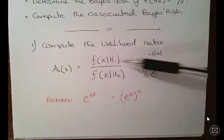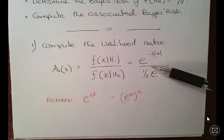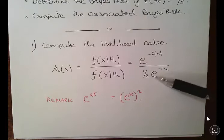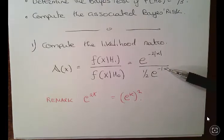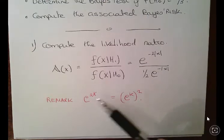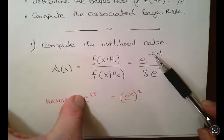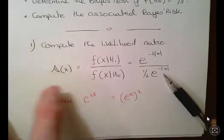So we have e to the minus two absolute value of x over half of e to the minus absolute value of x. Now just as a remark, e to the 2k is e^k squared, so this is actually, this value here is the square of this value here.